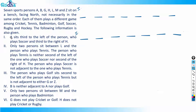The first clue says A sits third to the left of the person who plays soccer, and third to the right of H. Since there are seven persons total, three plus three plus one equals seven, so A must be in the middle. All persons are facing north, so your left is to this side and your right is to this side — just proceed like that.